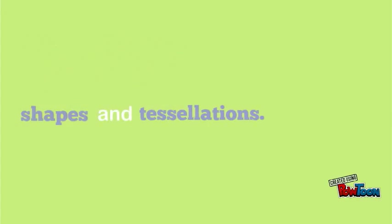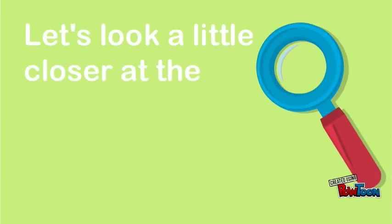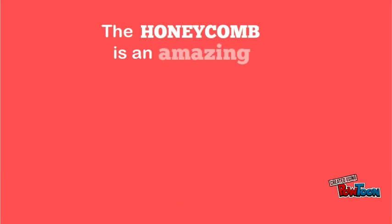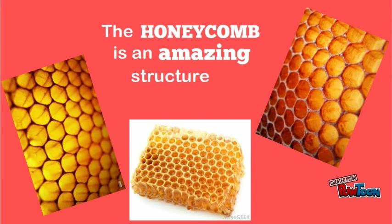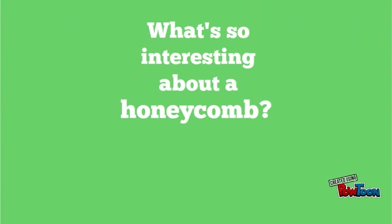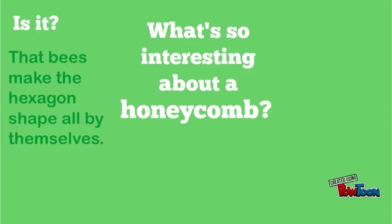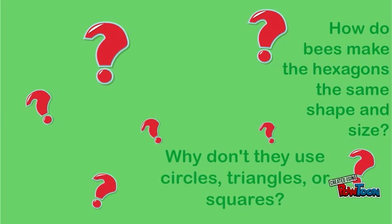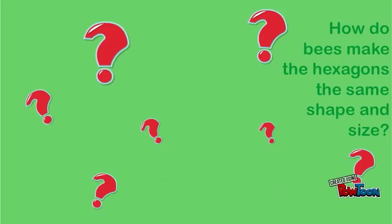Now that we know some interesting things about shapes and tessellations, let's look a little closer at the honeycomb. The honeycomb is an amazing structure. What's so interesting about a honeycomb? Is it that bees make the hexagon shape all by themselves? Why don't they use circles, triangles, or squares? How do bees make the hexagon the same shape and size?